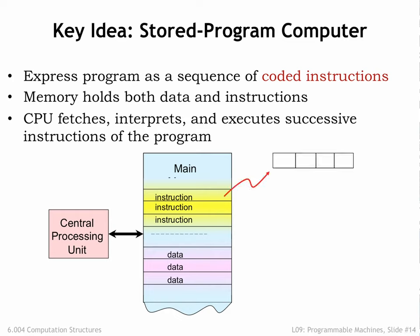Interpreted as an instruction, a value in memory can be thought of as a set of fields containing one or more bits encoding information about the actions to be performed by the CPU. The OPCODE field indicates the operation to be performed, e.g., ADD, XOR, COMPARE. Subsequent fields specify which registers supply the source operands and the destination register where the result is stored. The CPU interprets the information in the instruction fields and performs the requested operation.